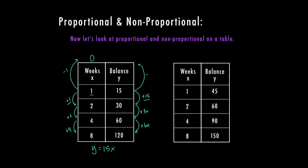Not subtract one, but subtract whatever is happening to the y. And in this case, it's adding 15. So I'm going to subtract 15. 15 minus 15 is zero. So I can see that this one goes through zero, zero. So this one is proportional.